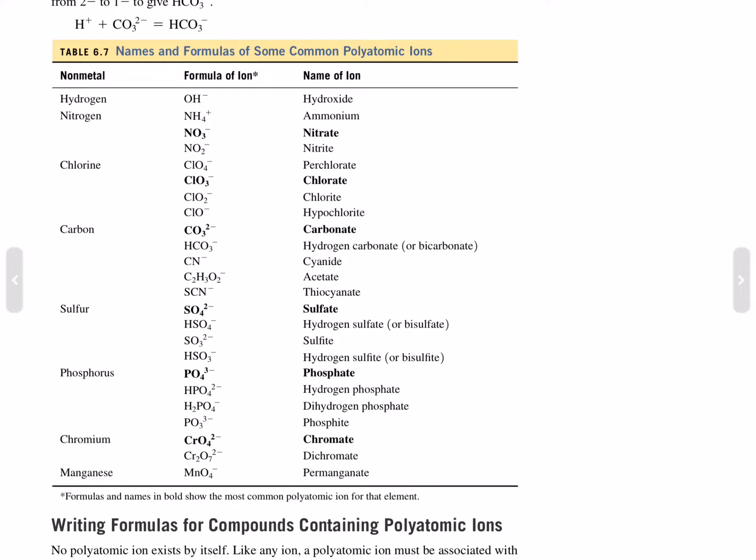Table 6.7. Names and formulas of some common polyatomic ions. OH^-, hydroxide. NH4^+, ammonium. NO3^-, nitrate. NO2^-, nitrite. ClO4^-, perchlorate.